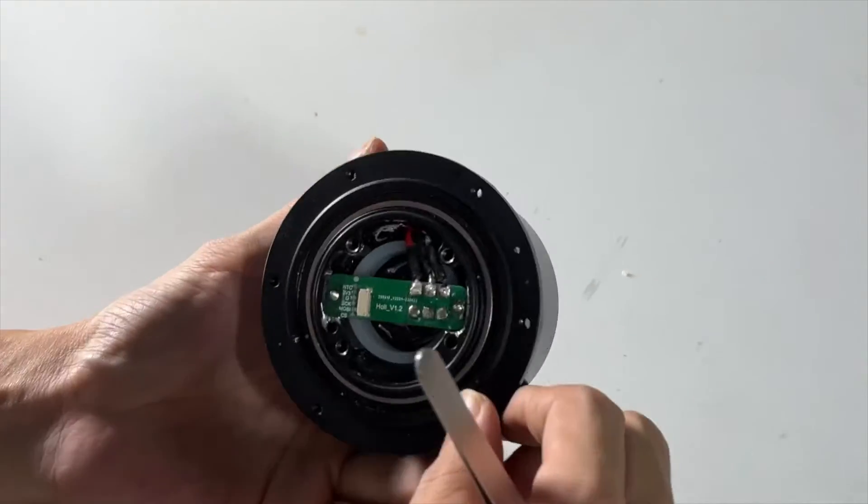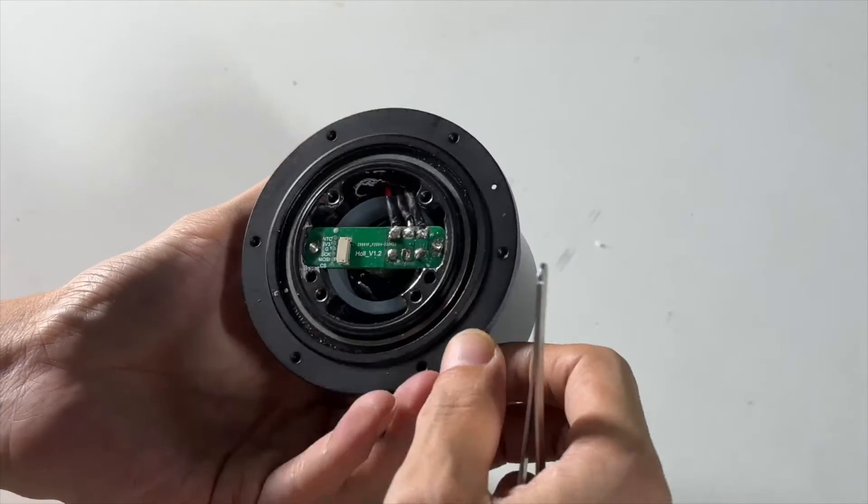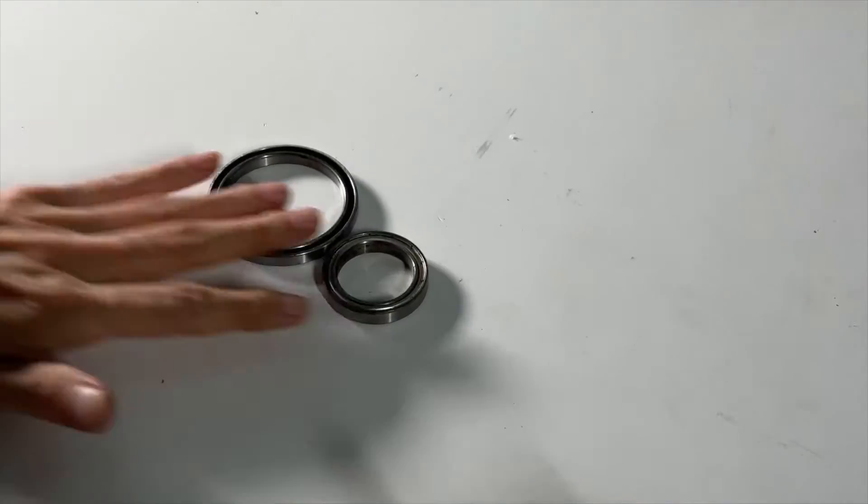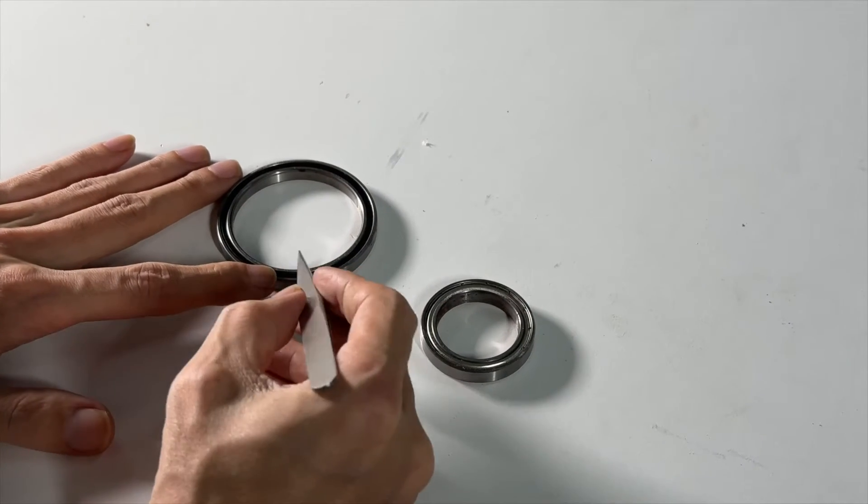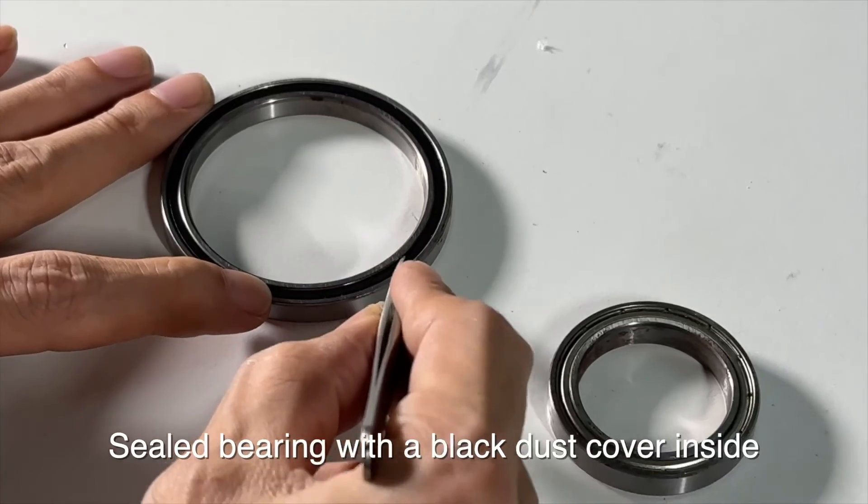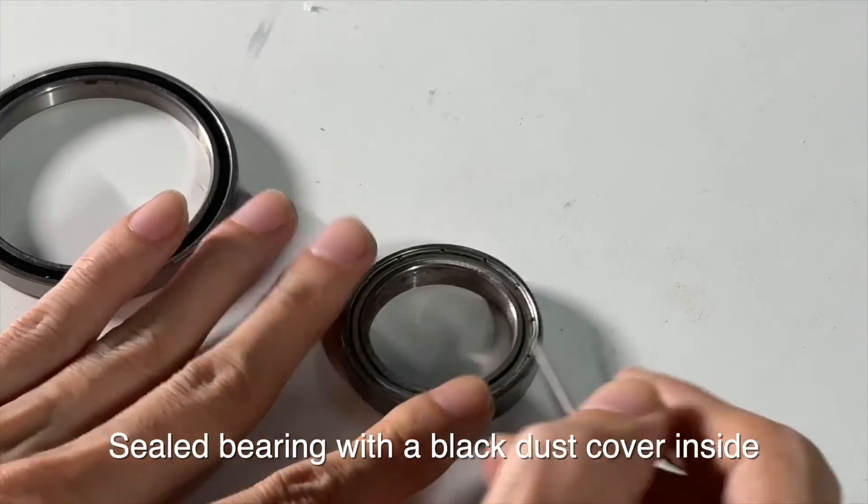This motor has multiple waterproof and dustproof designs. There are two bearings here. The bearing on the left is a sealed bearing, which has a black cover inside to prevent water and dust. The one on the right side doesn't have it.